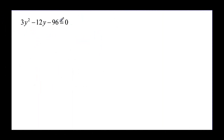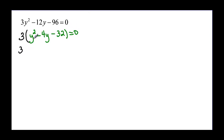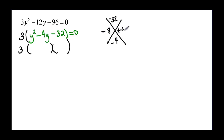Now we have another one to factor. This one has large numbers, but I can see it has a greatest common factor of 3. That leaves me with y squared minus 4y minus 32, and that equals zero. So I need factors of negative 32 that add up to negative 4 — that means one negative and one positive — which is negative 8 and positive 4. So the factors are (y minus 8)(y plus 4) equals zero.